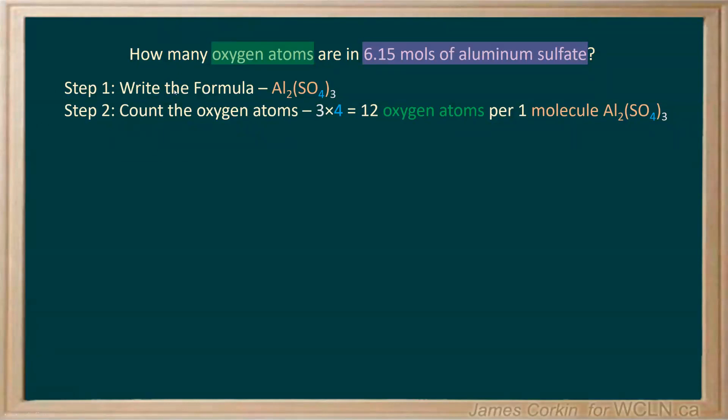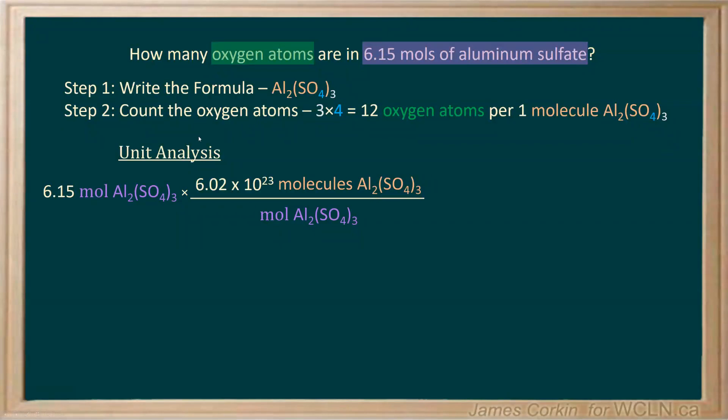We're now ready to do our unit analysis. We'll start with what we know: 6.15 moles of aluminum sulfate. We'll first convert that to molecules. Technically, that should be formula units because this is an ionic compound, but you'll often hear molecules used instead, even for ionic compounds. Any conversion involving moles to molecules uses Avogadro's number.